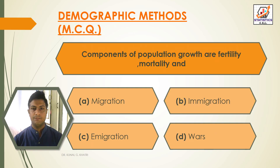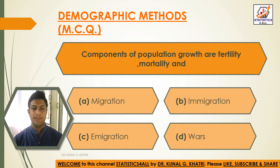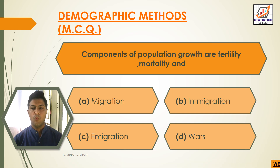Next question: the three components of population growth are fertility, mortality, and — Option A: migration, Option B: immigration, Option C: emigration, Option D: wars. The answer is Option A — migration. Fertility, mortality, and migration are the three main components of population growth.